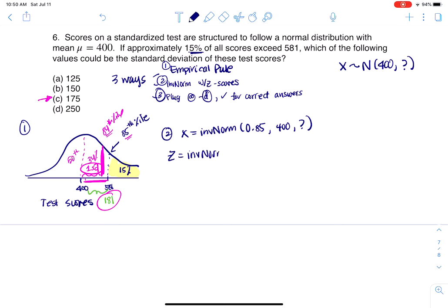So I could do the same thing here. I can say, let's go inverse norm, and I can do 0.85, 0, 1. And let me go over to my calculator for a moment and crunch that number. So when I do that, I get 1.036. So I know that the Z score has to be 1.036.